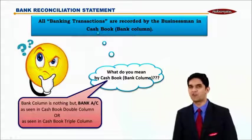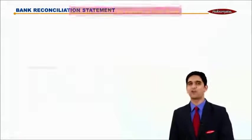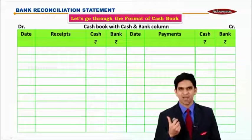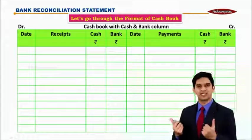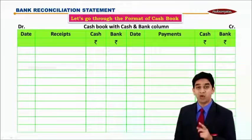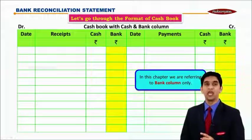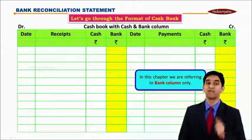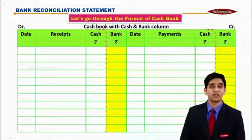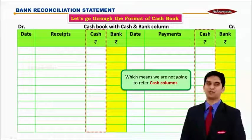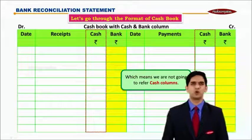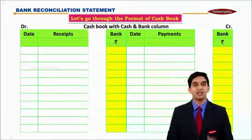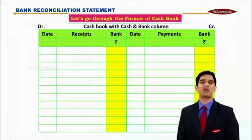Please recollect what is the format of cashbook. Let us go for the format of double column cashbook. We have cash and bank columns on each of the sides, that is debit and credit. In this chapter, we have to refer only the bank column. We don't want the cash column — let us cut it out and think only about the bank column.